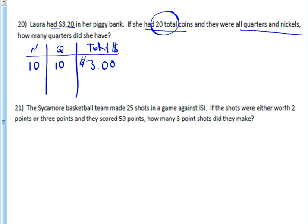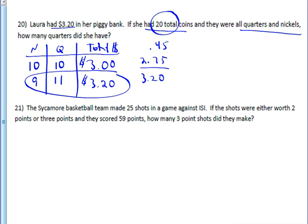That was a good first guess because it got us close to the $3.20. If we need more money, it makes sense that what you want to do is add an extra quarter and take away a nickel. It turns out 45 cents for the nickels — 9 times 5 — and $2.75 for the quarters gives you $3.20. So on our second guess, we found out that the answer is 9 nickels and 11 quarters, 20 total coins, equal to $3.20.